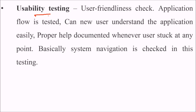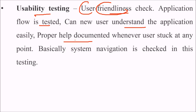Usability testing checks whether the application is properly usable and easy to use — it is a user friendliness check. Application flow is tested: can the user understand the application easily? Do we have a proper user manual or help document whenever the user is stuck? System navigation is checked in this testing.